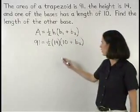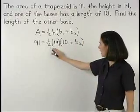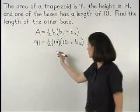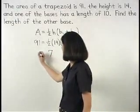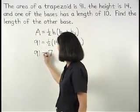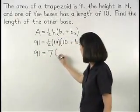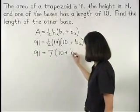Now simplifying on the right side, one-half times 14 is seven, so we have 91 equals seven times parentheses 10 plus B2.